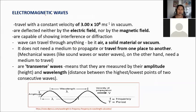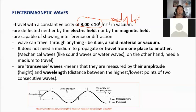For the characteristics and properties of electromagnetic waves: EM waves travel with a constant velocity of 3 times 10 to the power of 8 meters per second in vacuum — that is the speed of light. EM waves are deflected neither by electric field nor by magnetic field, and are capable of showing interference or diffraction. Waves can travel through air, solid material, or in vacuum. They do not need a medium to propagate or travel from one place to another.